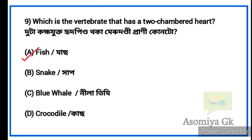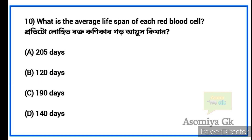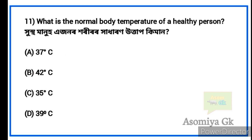Next question: What is the normal body temperature of a healthy person? Option 1: 37 degrees Celsius. The normal body temperature of a healthy person is 37 degrees Celsius.